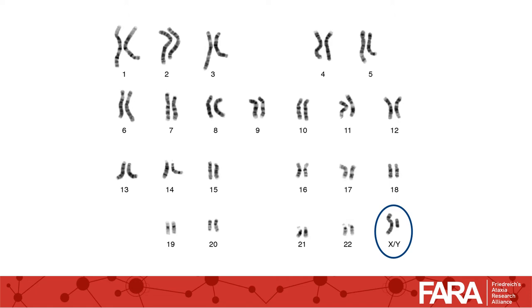I need to state a disclaimer here. The concepts I will be describing are the normal processes that occur in the vast majority of cell replication and inheritance. There are always exceptions to the rules. If everything worked perfectly every time, we wouldn't be talking about rare genetic conditions.